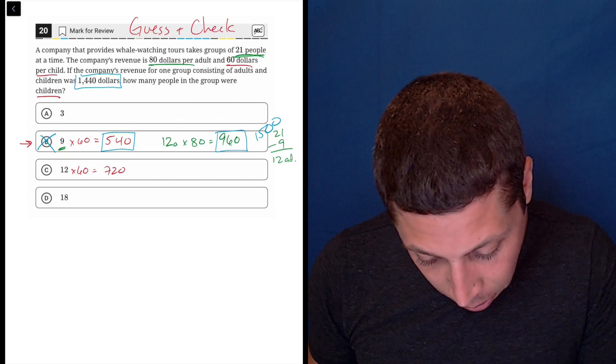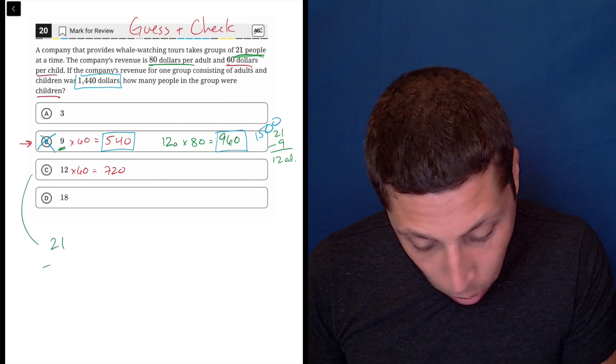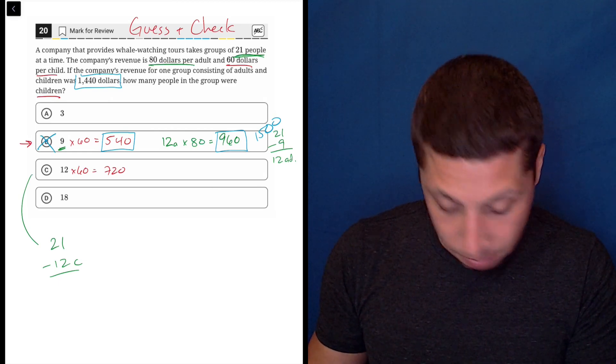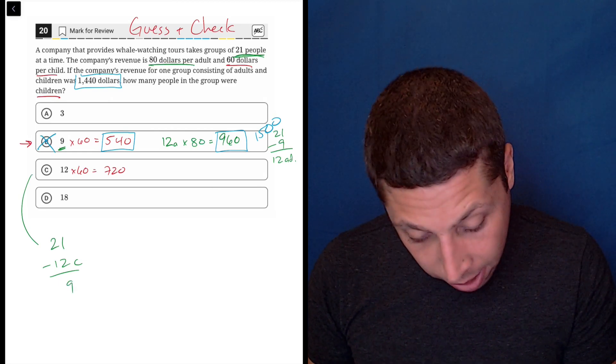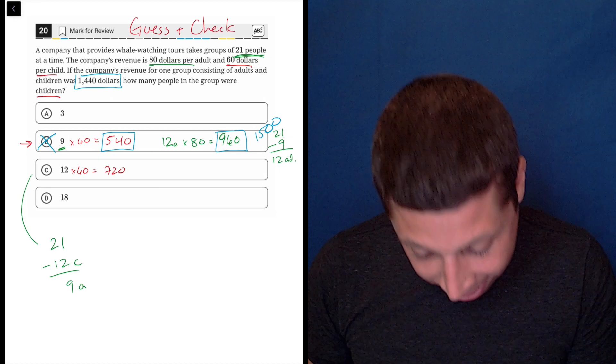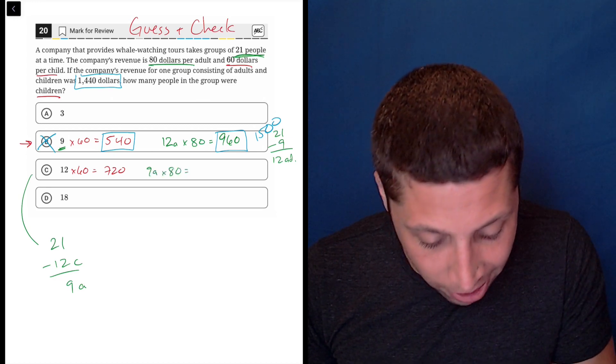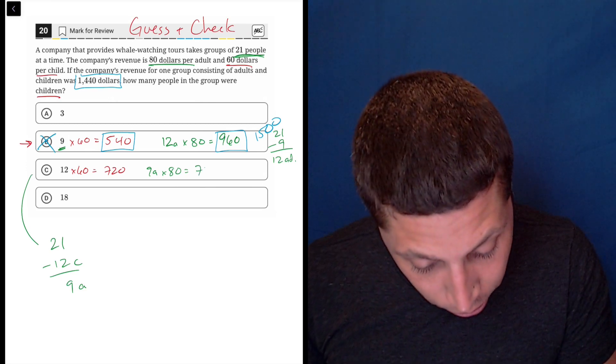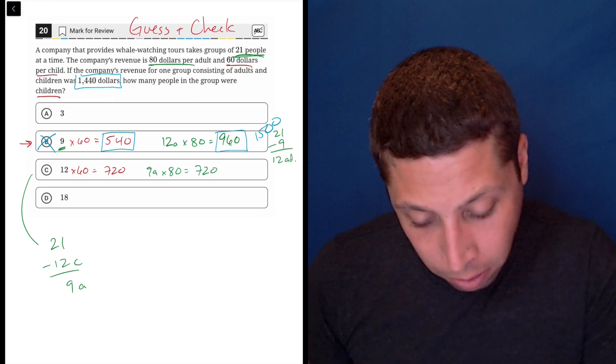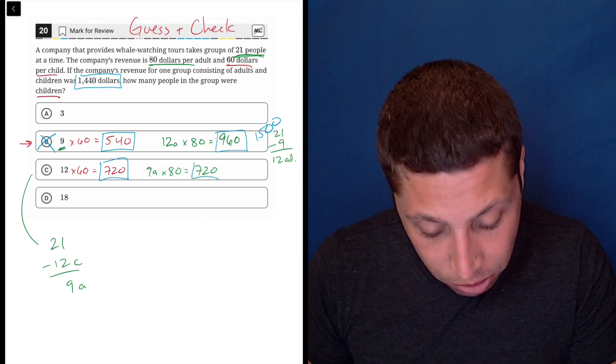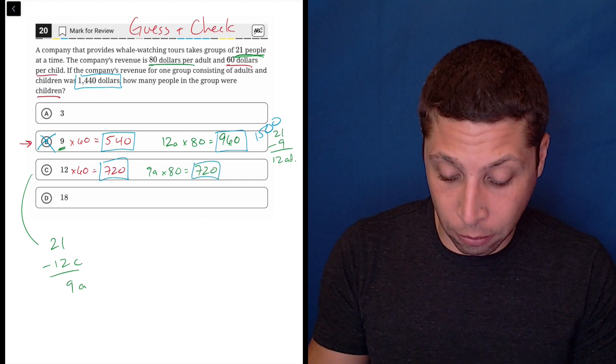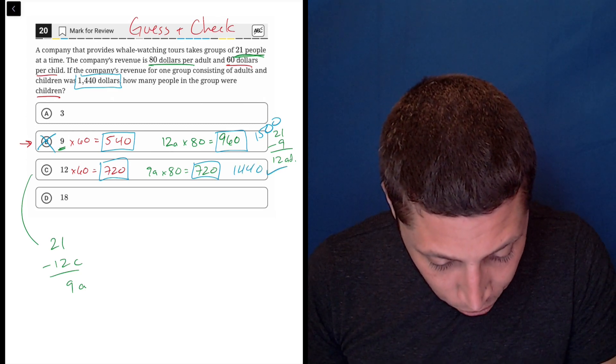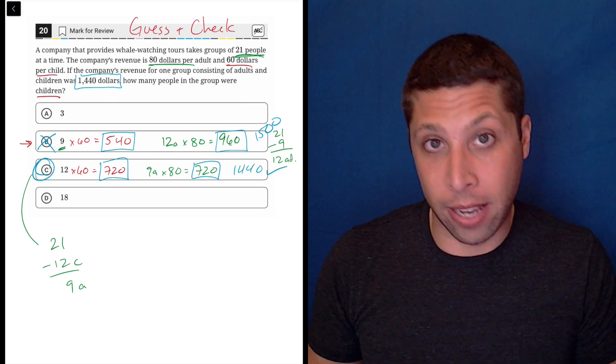Now let's switch over to the adults. So I'll come down here for this one. We had 21 people, we just lost 12 children. So 21 minus 12 is nine and that is the adults. So nine adults times $80 a piece, nine times 80 is 720. So it's coincidence that they're the same. I didn't know that was going to happen, but 720 plus 720, what's the total? That is 1440, which is what it needs to be. And so choice C is the answer.